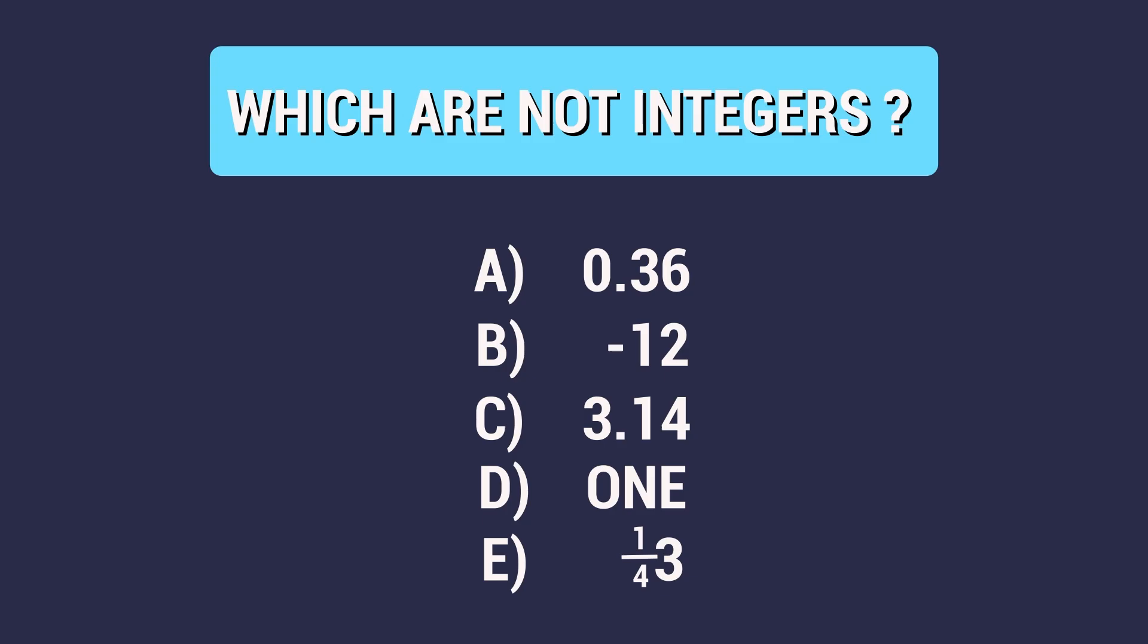Here is a quick test to see if you get it. Which of the following are not integers? That's right. A, C and E are all non-integers. Good job if you got it.